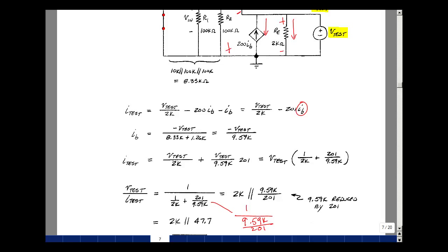You can see what's happening with the controlled source. It's making this resistance look like it's 201 times smaller. This is one of the properties of controlled sources. They can change resistance levels in a circuit. We'll use this idea in a lot of electronics courses to change the resistance level, and we're going to use this to try to maximize power transfer.